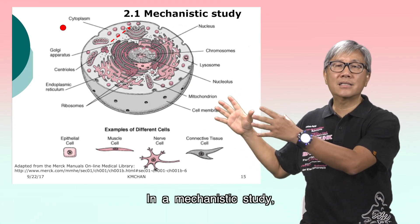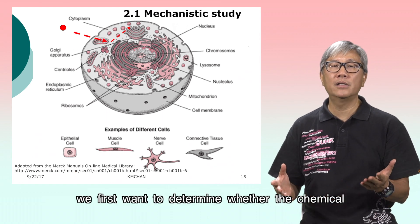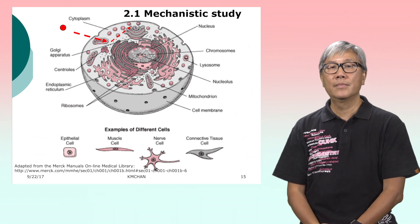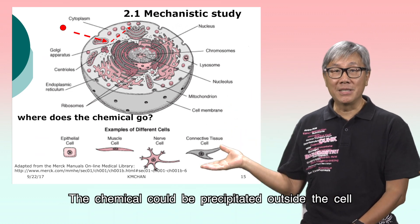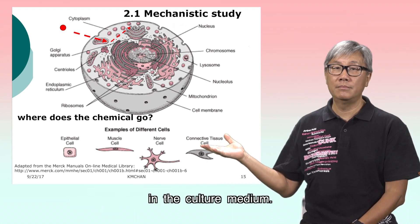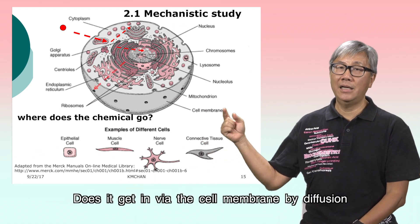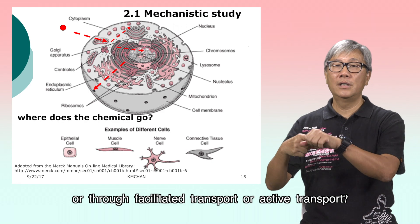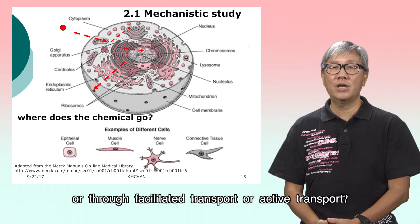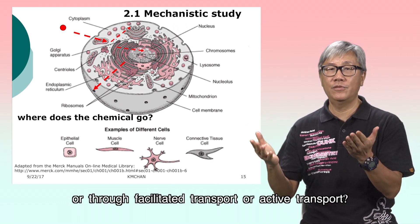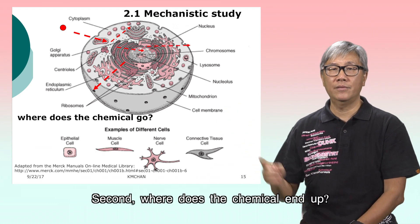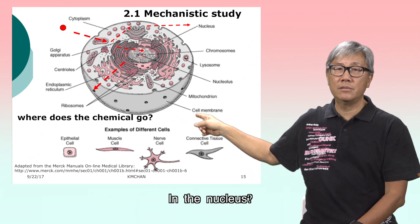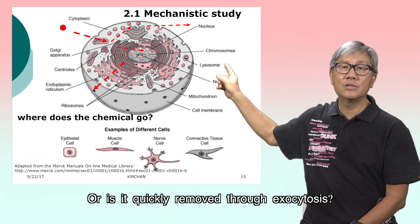In a mechanistic study, we first want to determine whether the chemical we are testing can enter the cells or not. The chemical could be precipitated outside the cell in the culture medium. Does it get into the cell membrane by diffusion, through facilitated transport, or active transport? Second, where does the chemical end up — in the nucleus, or is it quickly removed through exocytosis?